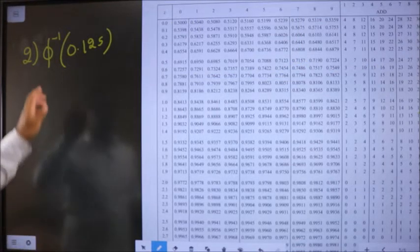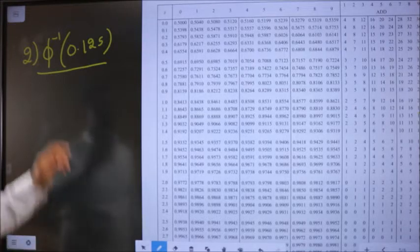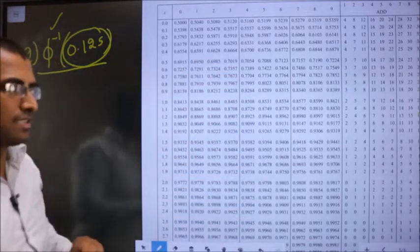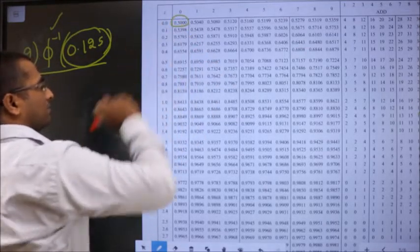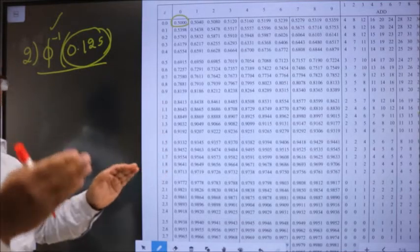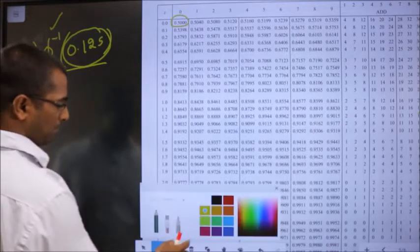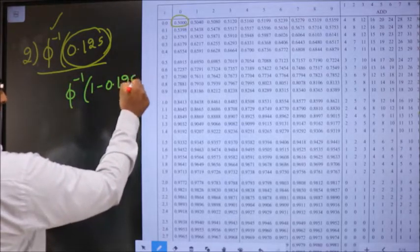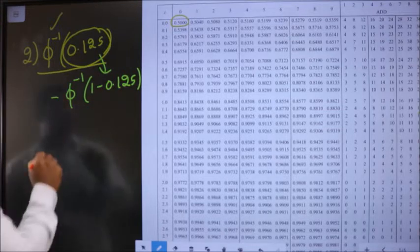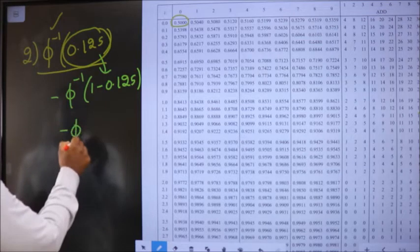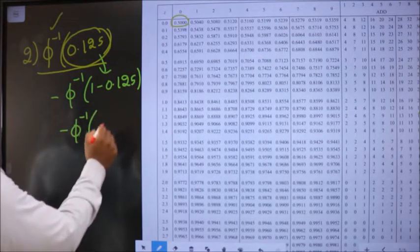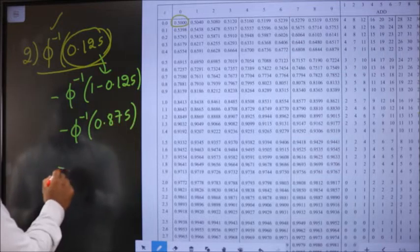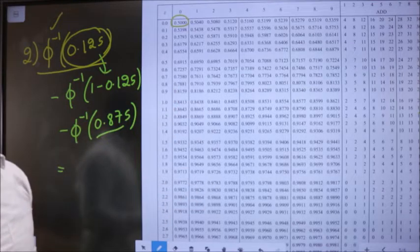Now I want to find Φ⁻¹(0.125). Since it's inverse, we need to look for this value in the table. The difficulty is the values start from 0.5, so this needs to be converted to greater than 0.5 by subtracting it from 1. Whenever we subtract the inside value from 1, outside you should put a negative sign — it's a rule. So that becomes minus Φ⁻¹ of 1 minus 0.125, which is 0.875.